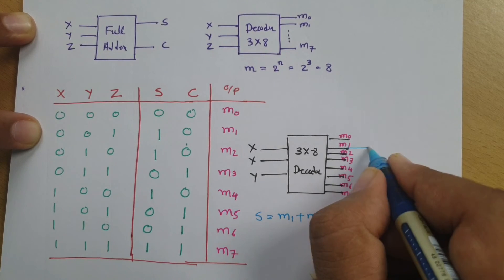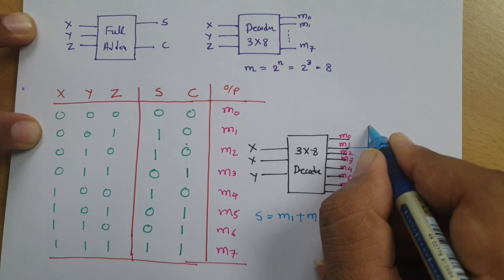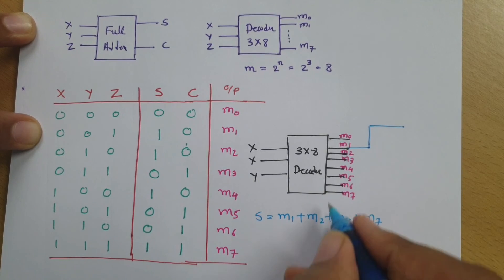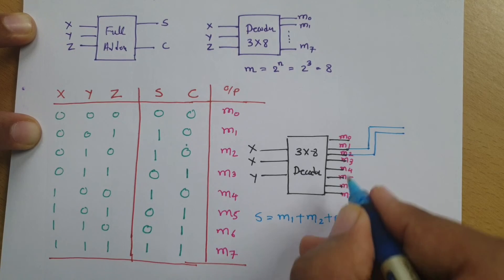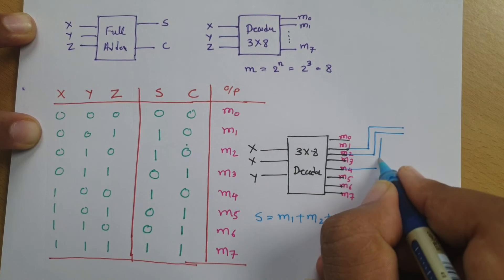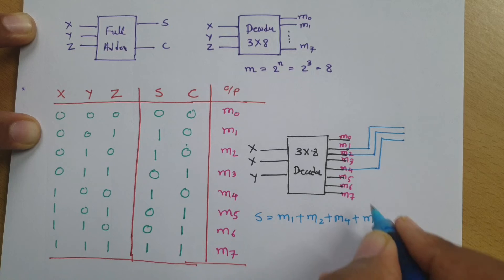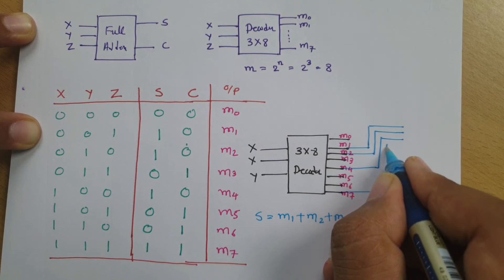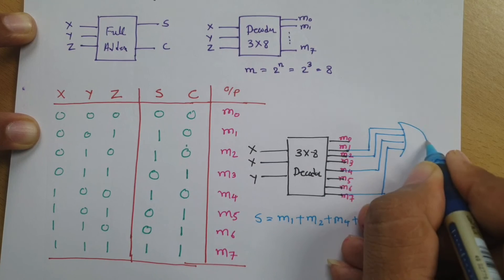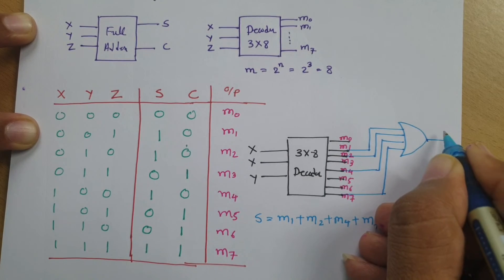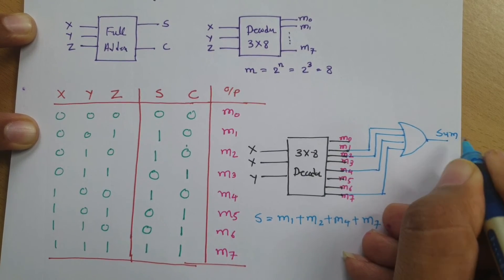So if you OR this terminal, we will be having sum. This is my M1, then we have M2, then we have M4, and then we have M7. So this ORing is resulting into sum.